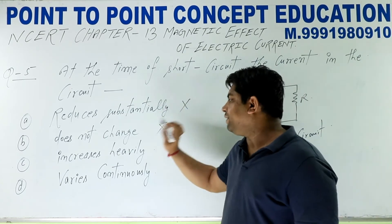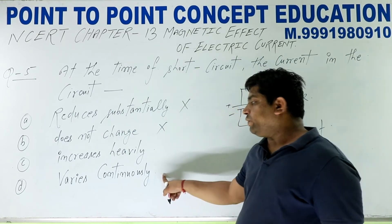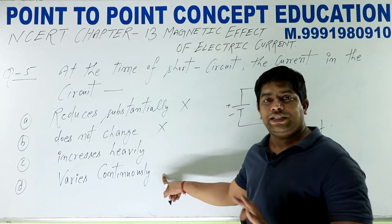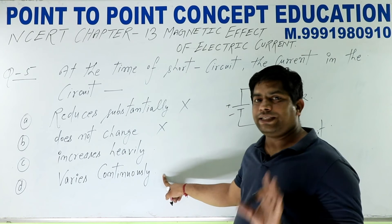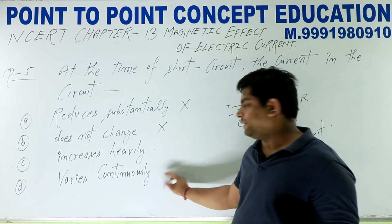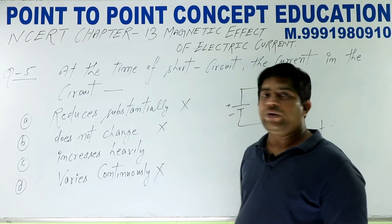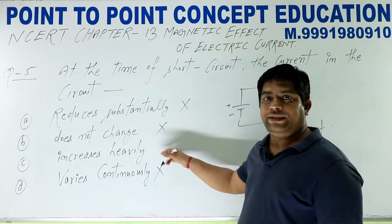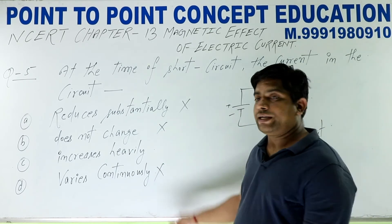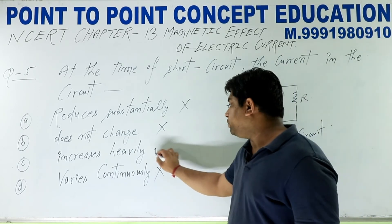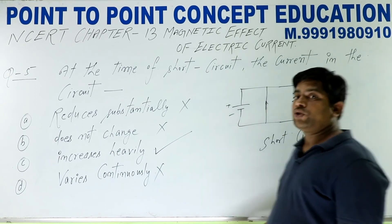Does not change — change होता है, यह भी गलत है। Vary continuously — इसका मतलब है change होता रहेगा, कभी बढ़ेगा कभी घटेगा, ऐसा नहीं होता, सिर्फ बढ़ता है, तो यह वाला भी गलत है। तो होगा क्या — increase heavily, एकदम से अचानक ही बहुत ज़्यादा current increase हो जाता है। तो यह वाला option correct है।